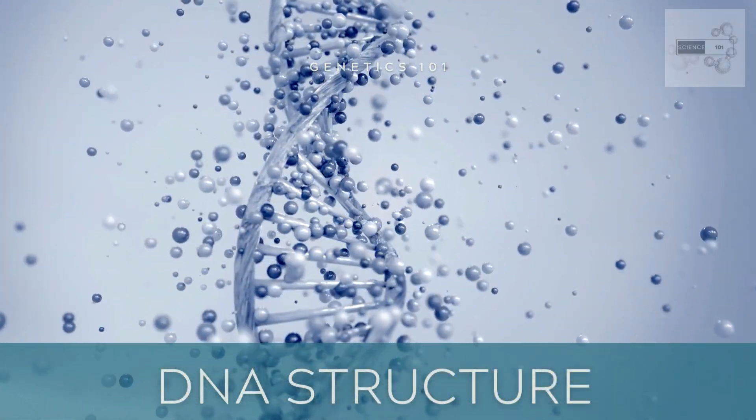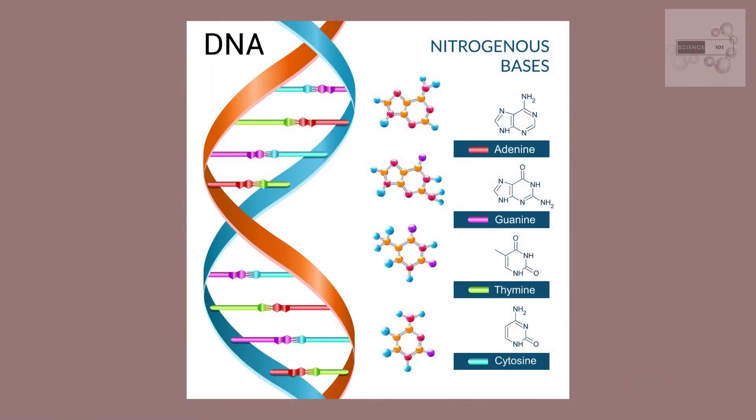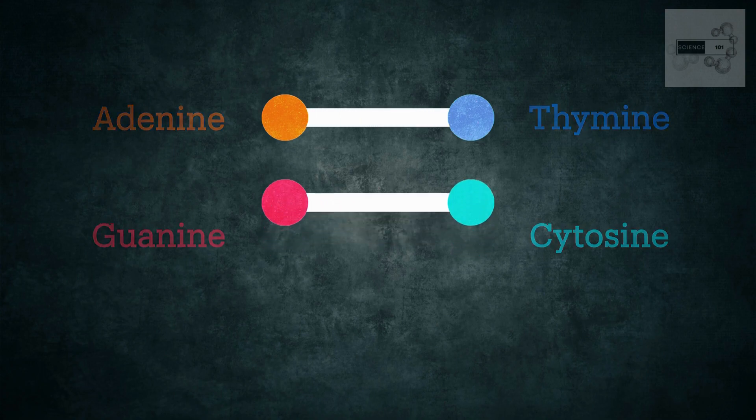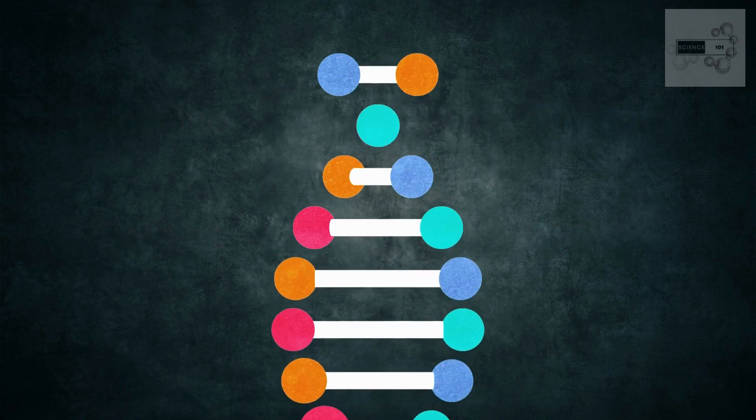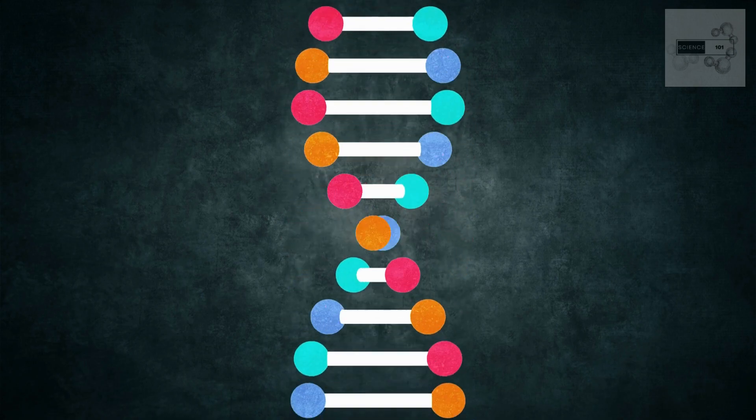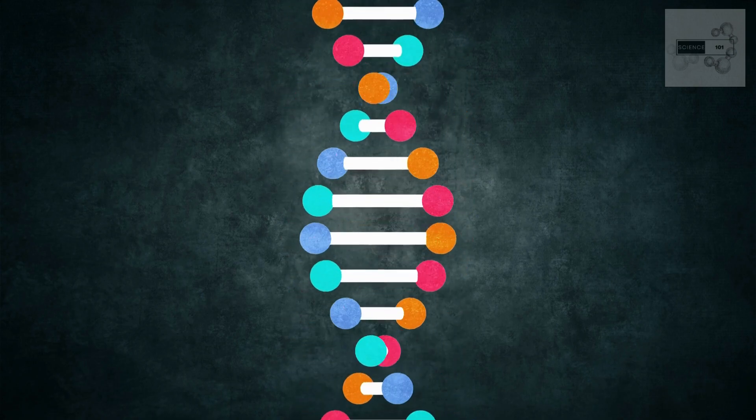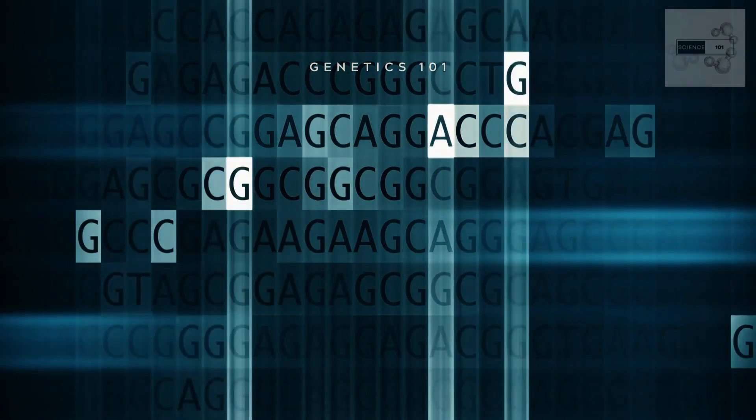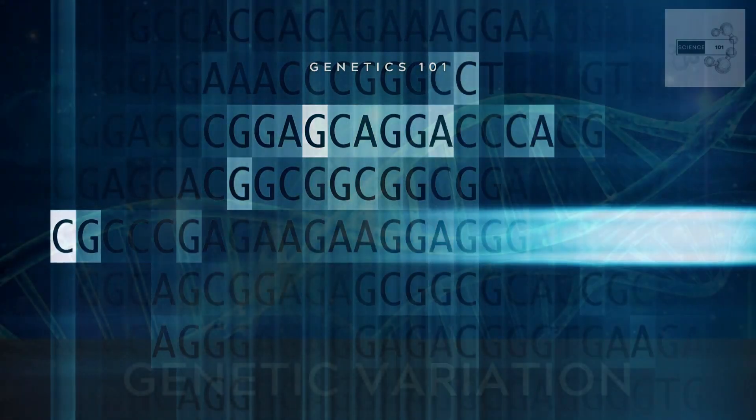DNA, or deoxyribonucleic acid, is the genetic material that carries the instructions for the development and function of all living organisms. DNA is composed of four types of nucleotides: adenine, guanine, cytosine, and thymine. These nucleotides form a double helix structure that is held together by hydrogen bonds. The sequence of nucleotides determines the genetic information encoded in DNA.